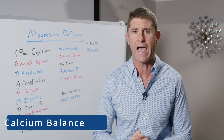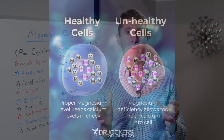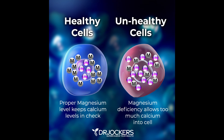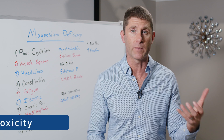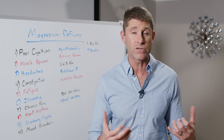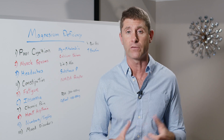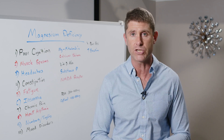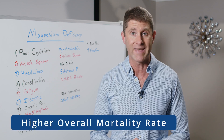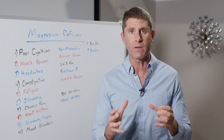Magnesium is key for calcium balance — it helps keep the optimal level of calcium within a cell. Calcium is critical for all action potentials within neurons and muscles. When we have too much calcium in a cell, it over-excites the cell and can create excitotoxicity, which damages the cell, increases oxidative stress and inflammation. A high intracellular calcium-to-magnesium ratio is associated with a higher overall mortality rate.